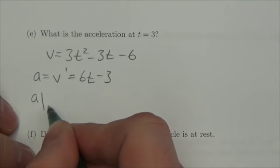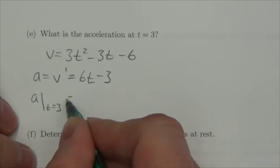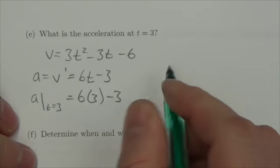And if we want to evaluate the acceleration where t is equal to 3, we simply plug that in. So, 6 times 3 minus 3.